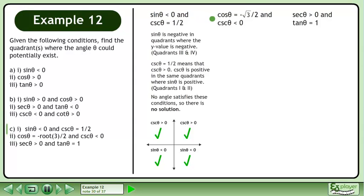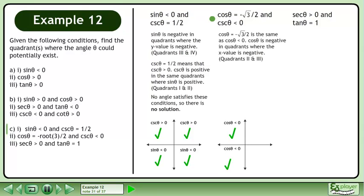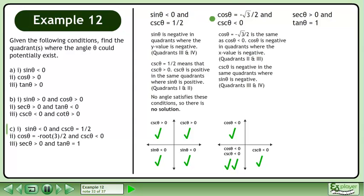Now we'll move on to part 2. Cosecant θ equals negative root 3 over 2 is the same as cosecant θ is less than 0. Cosecant θ is negative in quadrants where the x value is negative — this occurs in quadrants 2 and 3. Cosecant θ is negative in the same quadrants where sinθ is negative — this occurs in quadrants 3 and 4. There is overlap in quadrant 3. That is where the angle is located.